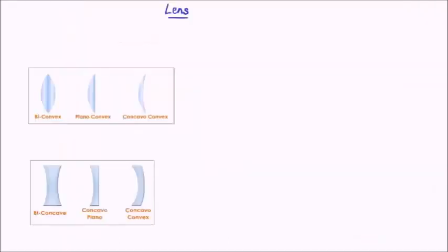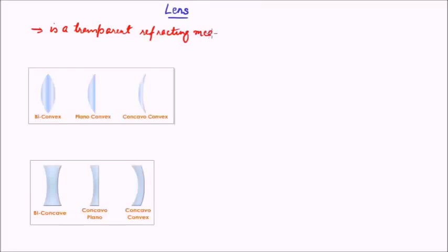First, let us see what the definition of lens is. A lens is basically a transparent refracting medium which is bounded by two surfaces which are normally curved. These two surfaces are generally spherical in shape, and in certain cases they are also planar.